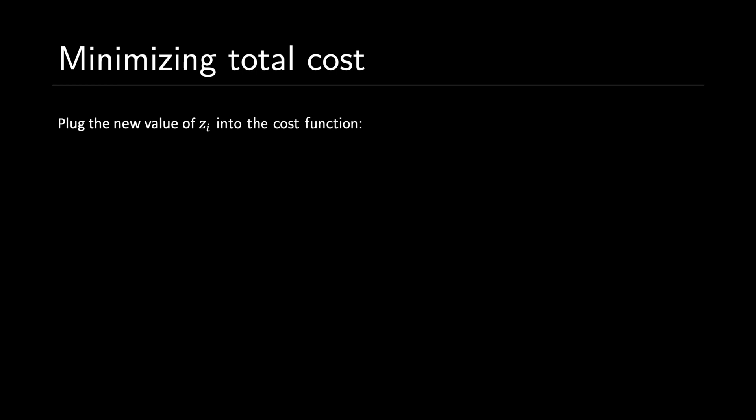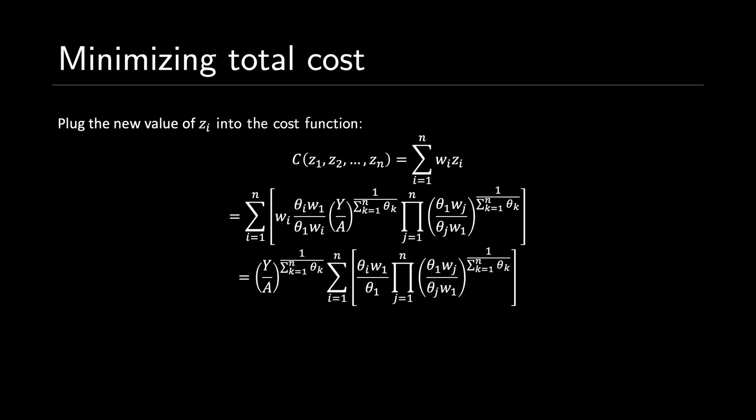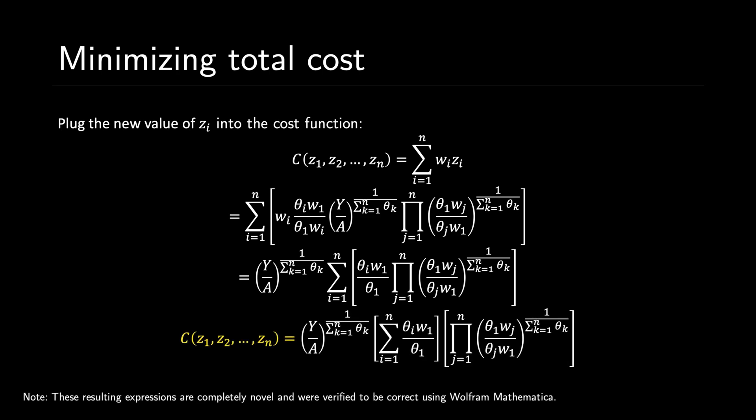Now we can determine an expression for the minimum cost by plugging all of this in. Our original cost function is c equals the sum from i equals 1 to n of w sub i times z sub i. Plugging in what we found for every z sub i yields a large expression; we factor out the term including y over A to the power of the summation, cancel some terms, and rewrite to arrive at the final answer — the expression that minimizes production costs.